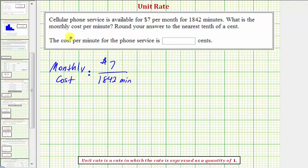But we want to find the cost per minute, which is called the unit rate, which means we want our denominator to be one, not 1,842.